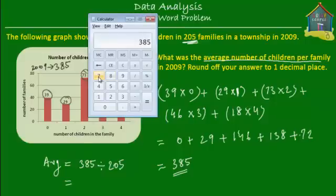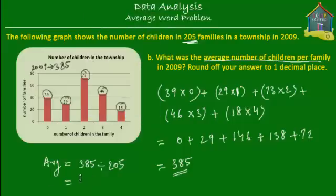It's 385 divided by 205 families, which equals 1.878. So this is equal to 1.878 children per family. That's simple — we just put these numbers into the formula for average and we find the average number of children per family. Now it says to round your answer to one decimal place, so we're only interested in one place after the decimal.